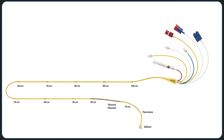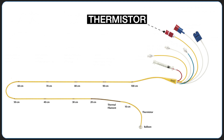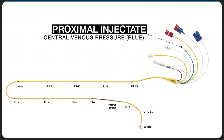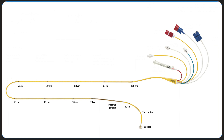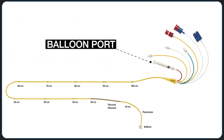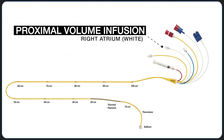For a standard VIP catheter, the lumens include the thermistor port, which measures blood temperature for cardiac output calculations; the blue CVP, or proximal injectate port, which terminates 30 cm from the catheter tip; the yellow, or PA distal tip port, which terminates at the tip of the catheter; the balloon port, which is used to inflate the balloon at the tip of the catheter; and the white right atrial, or proximal volume infusion port, which terminates 31 cm from the catheter tip.